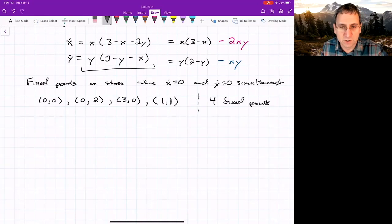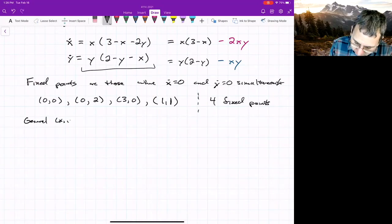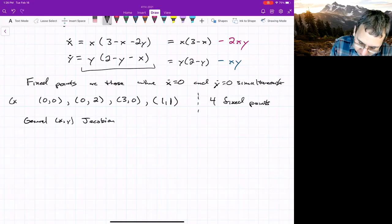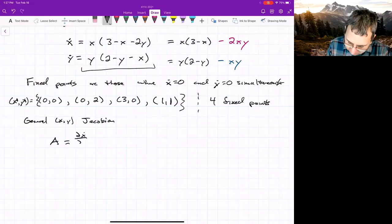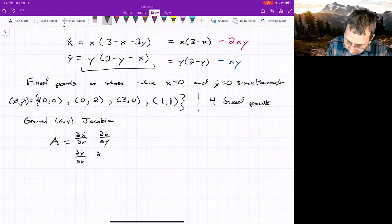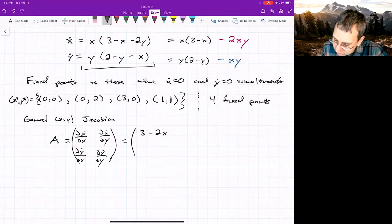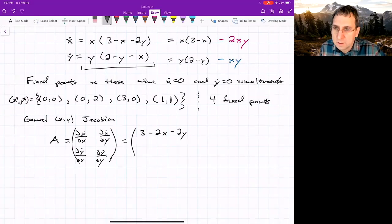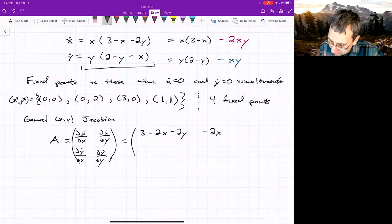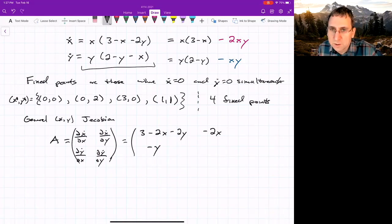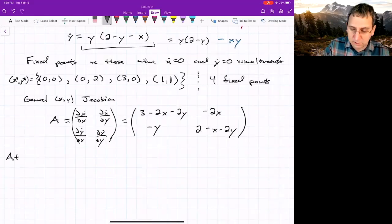So we've got four fixed points. So let's consider each of the four fixed points in turn. And how do we do that? We write the linearization matrix A or the Jacobian. So the general XY Jacobian, and then we could just plug in these numbers. A equals partial X dot partial X, partial X dot partial Y, partial Y dot partial X, partial Y dot partial Y. This will give us (3 - 2X - 2Y), then over here Y will be minus 2X, partial Y dot partial X will give us just minus Y, and partial Y dot partial Y will give us (2 - X - 2Y).